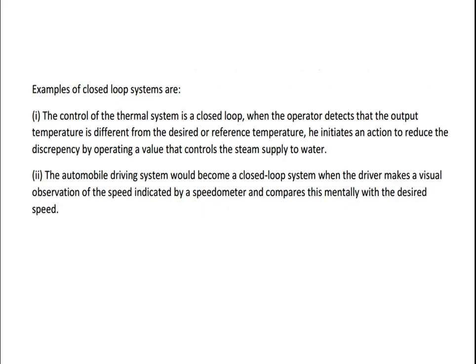Examples of closed loop systems include a thermal system and the automobile driving system. In a thermal control system, like an air conditioner or refrigerator, based on the environment temperature, we set the temperature inside — in winter we increase it, in summer we decrease it. This is how temperature is controlled.